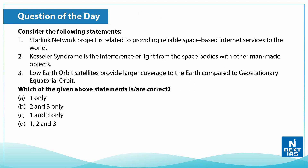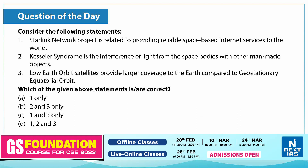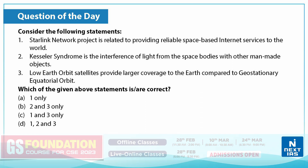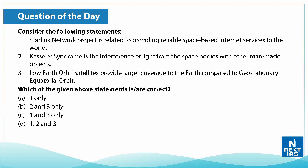Now let us take up a practice question on this topic. Consider the following statements. First, the Starlink network project is related to providing reliable space-based internet services to the world. Second, Kessler syndrome is the interference of light from space bodies with other man-made objects. Third, low earth orbit satellites provide larger coverage to the earth compared to geostationary equatorial orbits. Which of the given statements are correct? You can write your answers in the comment section below.